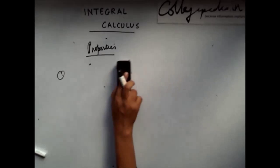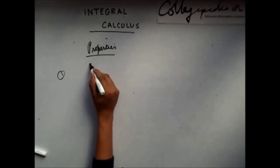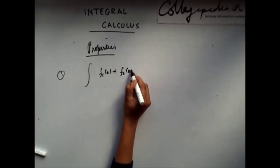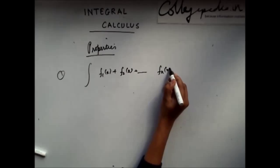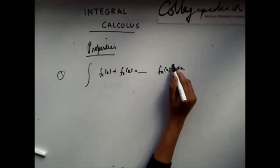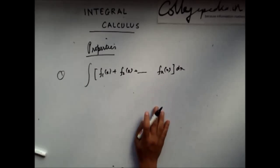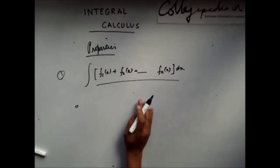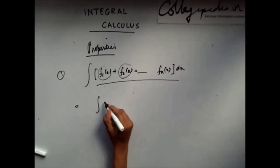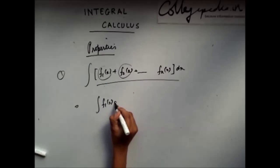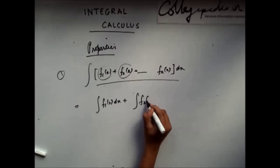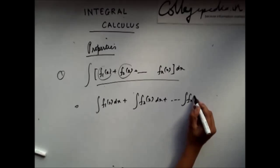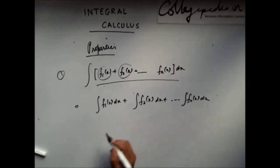The second property is: if you have been asked to integrate a summation of n functions, this property says that to integrate the whole thing, you can separately integrate each of the functions and sum the results.